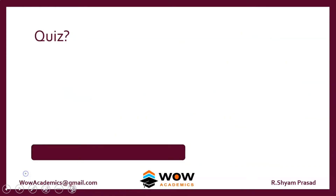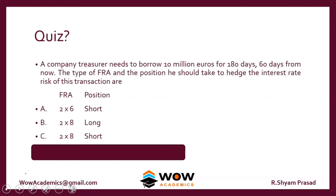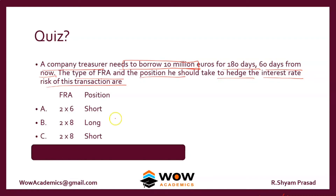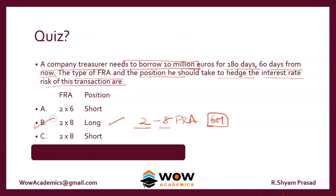Quiz: A company treasurer needs to borrow 10 million euros for 180 days, 60 days from now. The company wants to borrow, so it takes a long position. The loan starts in 2 months and runs for 6 months, so the FRA starts at month 2 and ends at month 8. The answer is a 2-8 long position FRA.